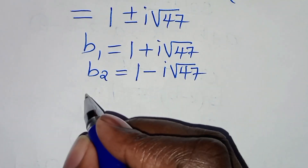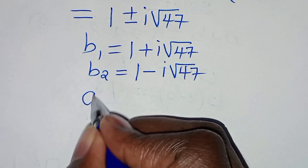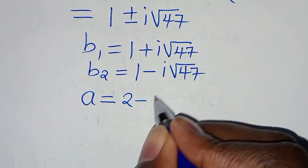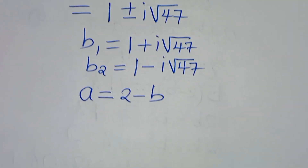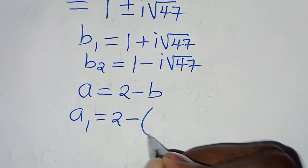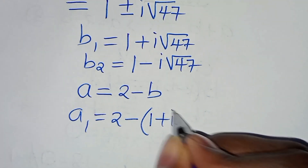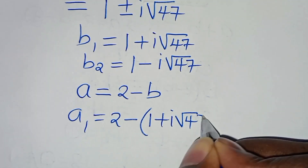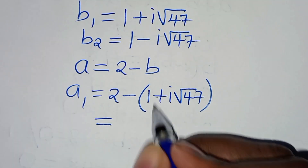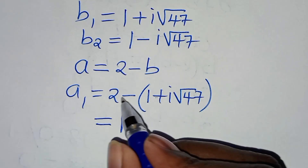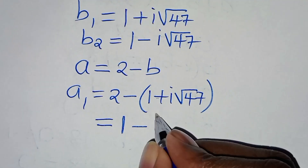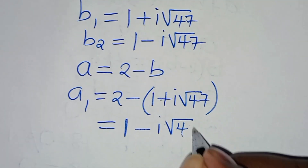Now let's find the corresponding values of a. Remember a equals 2 minus b. So a1 equals 2 minus b1, which is 2 minus (1 plus i√47). That gives us 2 minus 1 minus i√47, which equals 1 minus i√47.